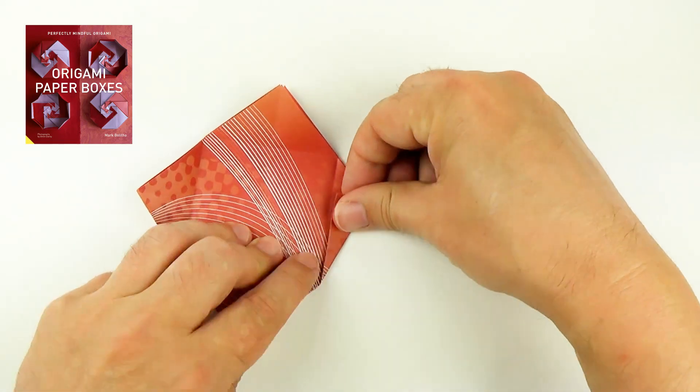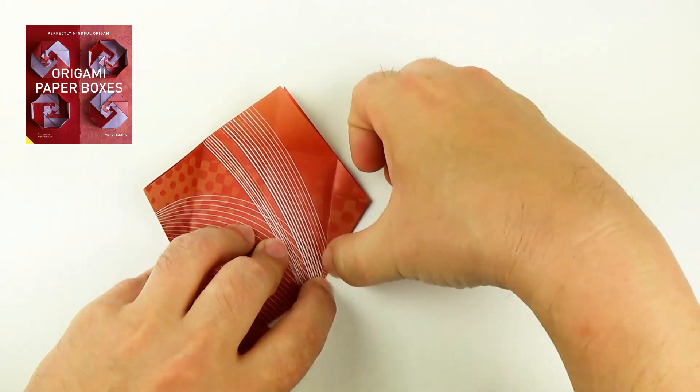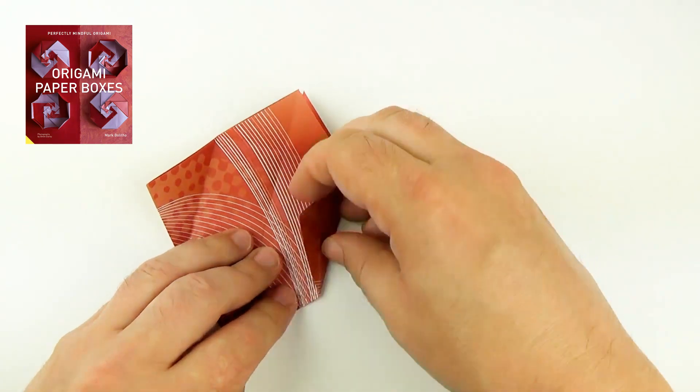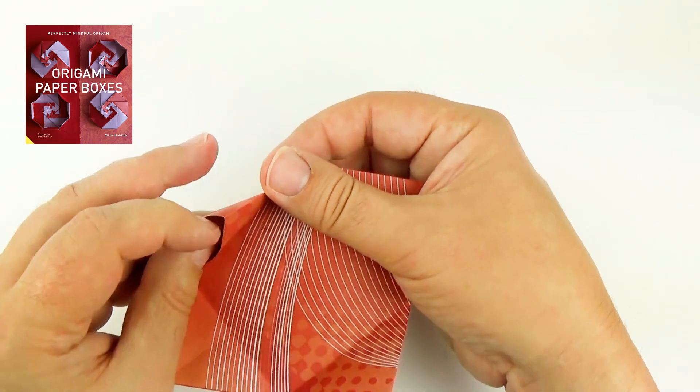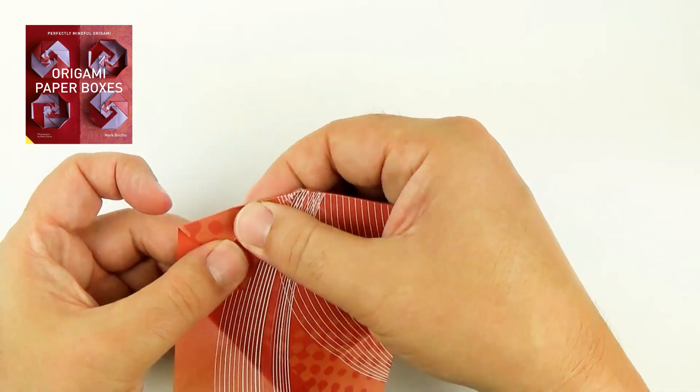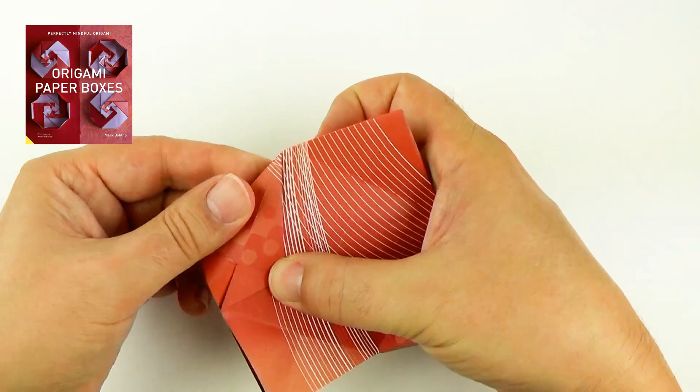Now again, repeat the process before. So we fold the edge in to the crease. Unfold. Fold it up perpendicular to the base. Separate the layers.